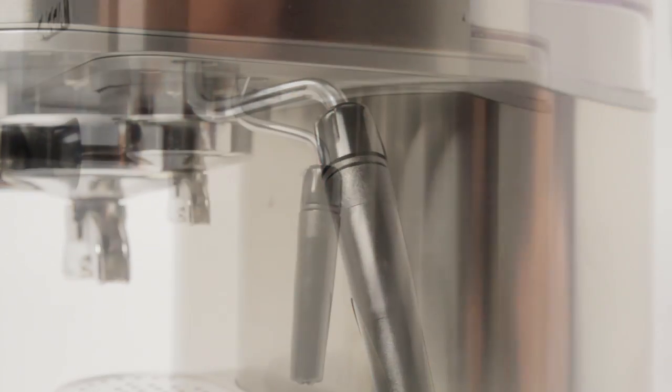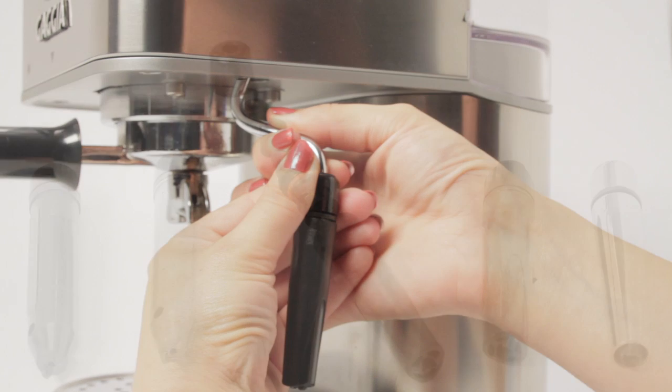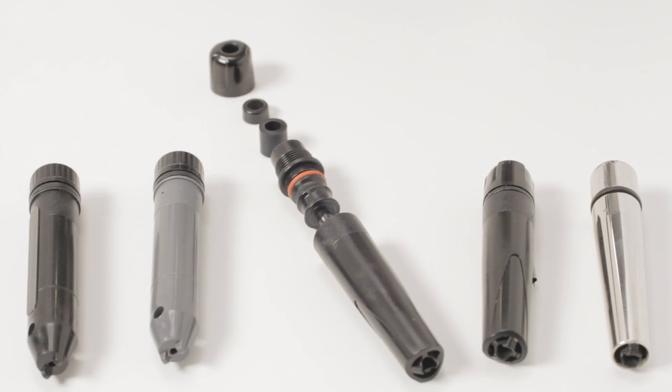Once assembled, pull on the top of the wand to make sure that it is attached snugly to the steam pipe. Panarello wands come in a number of varieties, but they all share the same parts, so this procedure is the same regardless of style.